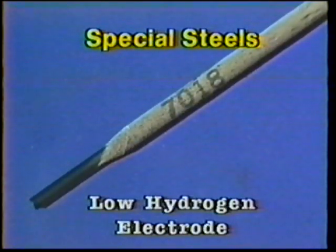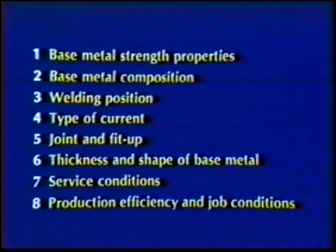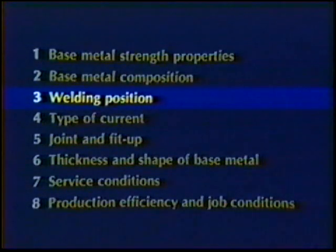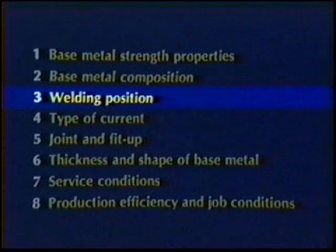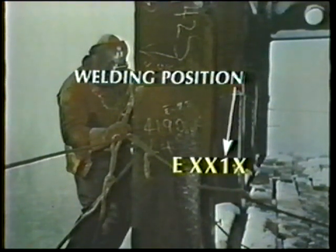For special steels — such as high strength, low alloy, and high carbon grades — select a low hydrogen type electrode. Point number three: electrodes are designed to be used in specific welding positions. Match the electrode to the welding position to be encountered by referring to the next to last digit of the electrode classification.